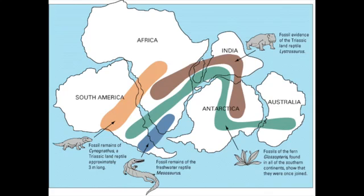Then you can look at when the continents came and examine Wegener's evidence. He believed that what happened was there was just one continent. This was in 1915. He believed that all the continents had once been joined together but slowly drifted apart. His evidence was that the shapes of continents fit together like a jigsaw, and fossils and rocks match up when the continents are put together.